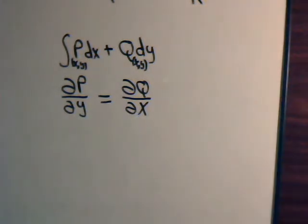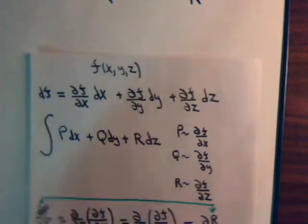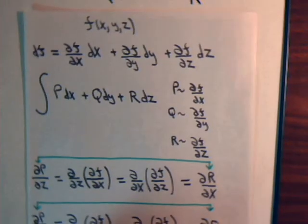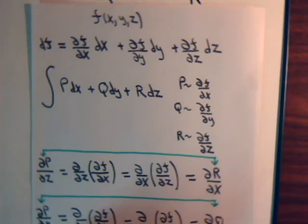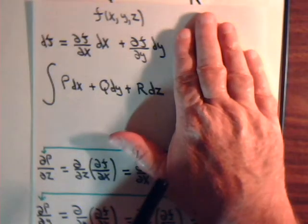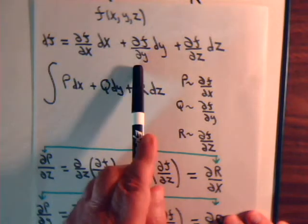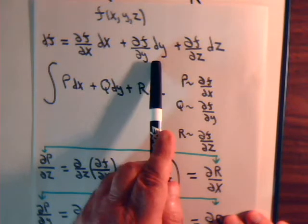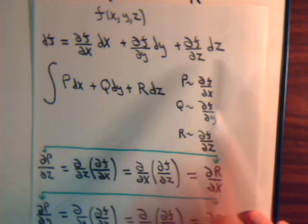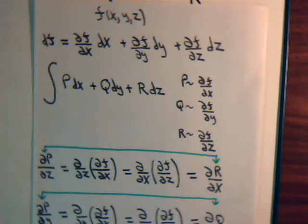Now we're going to do the same thing except in the three-dimensional case. Suppose we have some function of the variables x, y, and z. Then the total differential of that function would be the partial of f with respect to x times dx, plus the partial of f with respect to y times dy, plus the partial of f with respect to z times dz. This is just an extension of what we've done in the earlier videos.